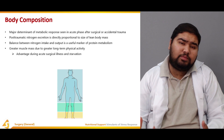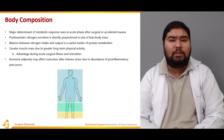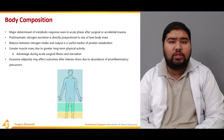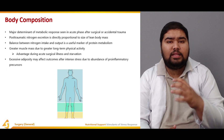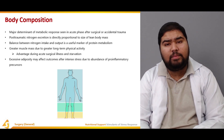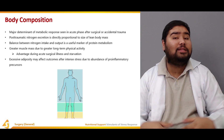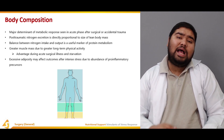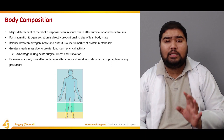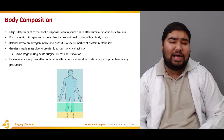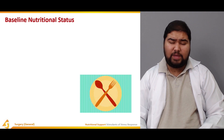Greater muscle mass due to long-term physical activity has an advantage during acute surgical illness and starvation, because it provides major fuel to the body and helps form new protein, aiding recovery. However, excessive adiposity may affect outcome after intense stress due to abundance of pro-inflammatory precursors. In obese individuals, these pro-inflammatory precursors are activated in response to stress, complicating healing and resulting in worse outcomes compared to a lean body.